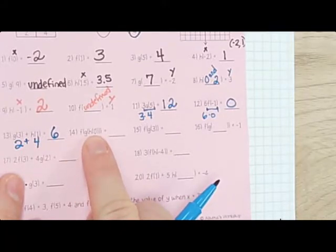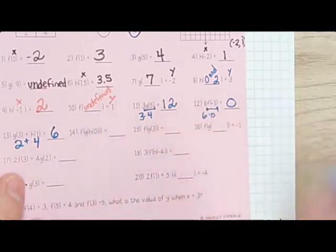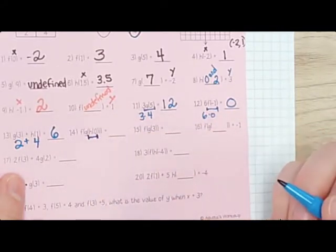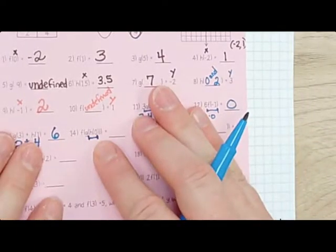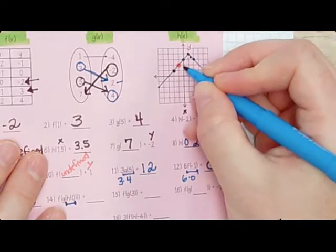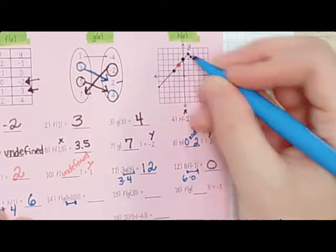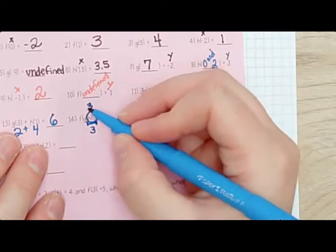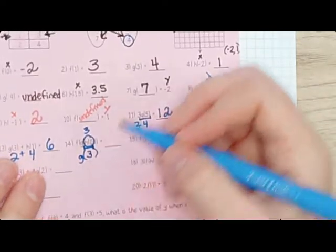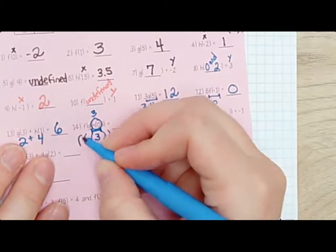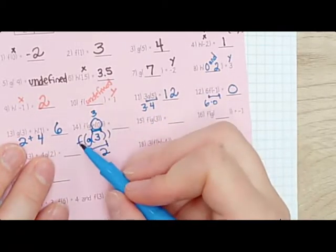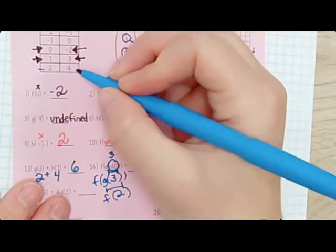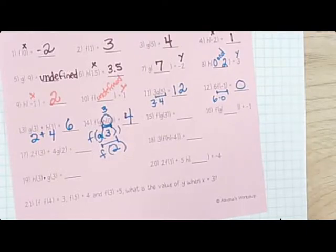This one has all the functions with 0. We need to do the most inside parentheses first: f(g(h(0))). Start with h(0): x is 0, that's 3. Now do g(3): g(3) is 2. Last step: f(2) — that's 4. That was several steps for that one problem.